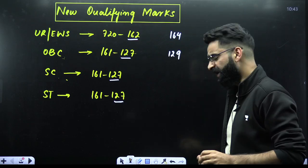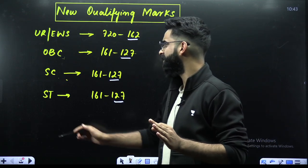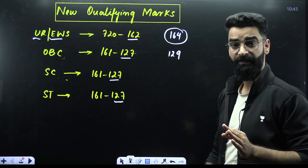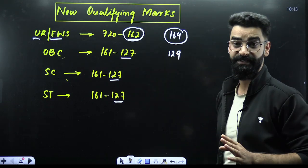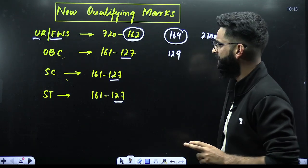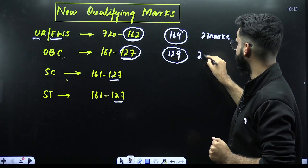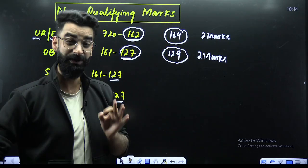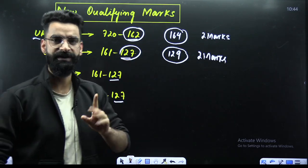My dear students, first of all if you look at your qualifying marks from the NEET 2024 examination, earlier in the unreserved EWS category it used to be 124 before the publication of the new result. Earlier it was 124, now it's 164 and now it's 162. So just the margin of two marks. Similarly in the OBC category initially it was 129, now it's 127, again just the margin of two marks.